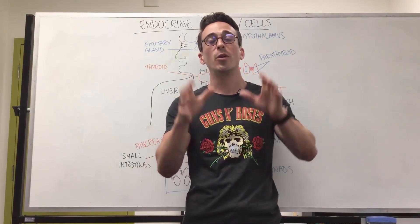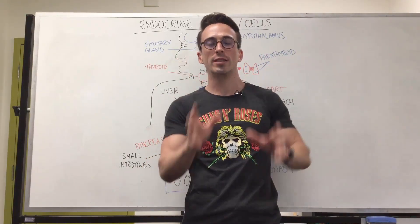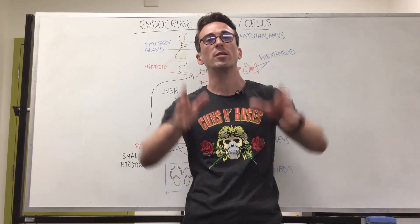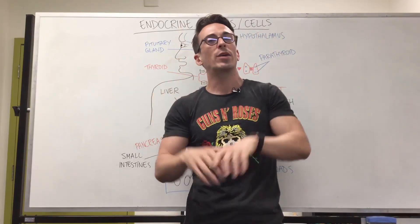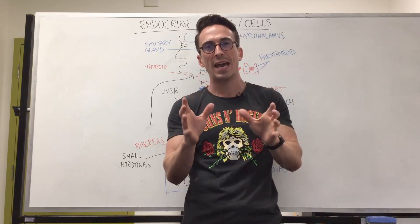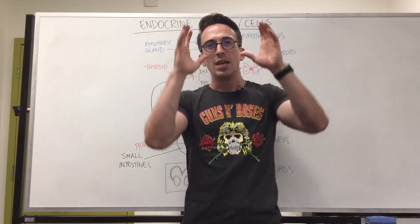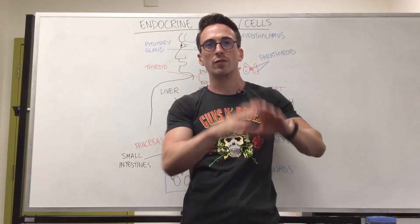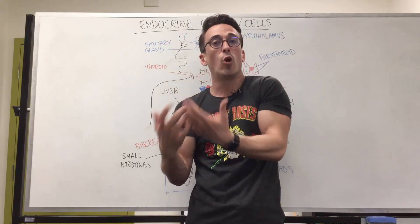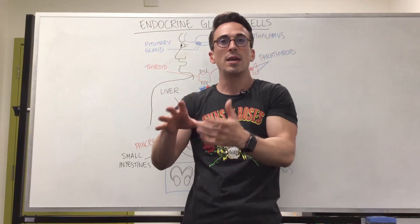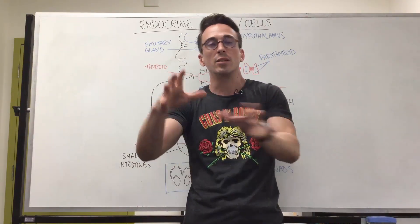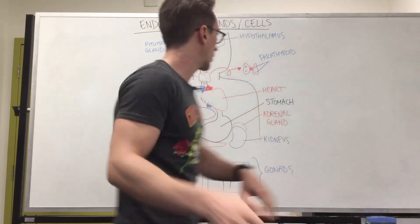Hi everybody, Dr. Mike here. In this video we're going to take a look at some of the glands and cells of the endocrine system that release specific hormones that play a specific role in the body. We can't go through all of them but I'm going to go through as many as I possibly can in the next five minutes. The endocrine system is a collection of glands or cells that release chemicals we term hormones into the bloodstream, delivered to distal, quite distant, widespread portions of the body.